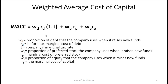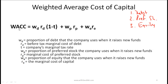The central equation is the weighted average cost of capital (WACC). Assuming three components of capital — debt, preferred shares, and common equity — the formula is: WACC = (weight of debt × cost of debt × (1 − T)) + (weight of preferred equity × cost of preferred equity) + (weight of common equity × cost of common equity).